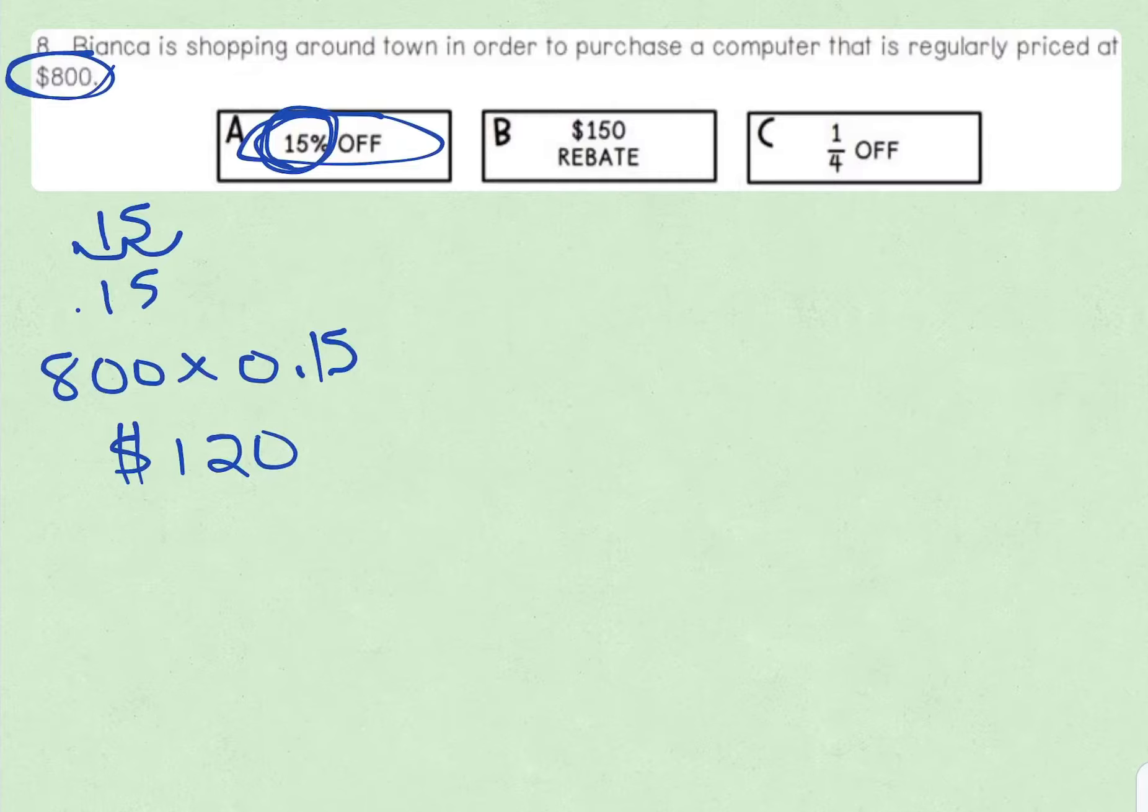So that is the discount itself. That's part one. The next part is, what would the sale price be with 15% off? Now, for the sale price, you're taking the 800 and you're having to subtract the $120. Now, some people just want to subtract 15, but remember, it's 15%. We don't know how many dollars that is. That's why we calculated that first. Now, we're going to subtract. When we subtract 800 minus 120, we get a sale price of $680.